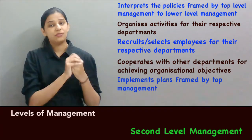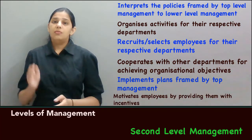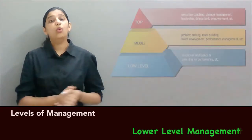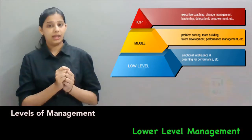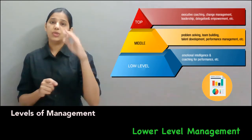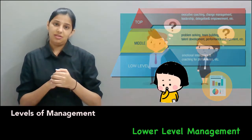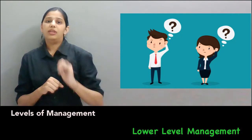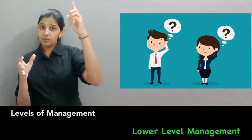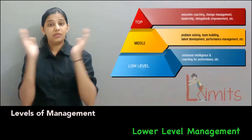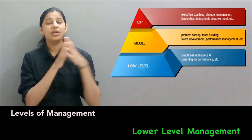The middle level also cooperates with other departments to achieve organizational objectives, and implements plans framed by top management. Now let's proceed to the last level: Lower Level Management. When we have a higher authority, we need to report to them about our activities — this is the general procedure in all organizations. The lower level management performs work as per the directions received from the top level and middle level of management, and they have limited authority.